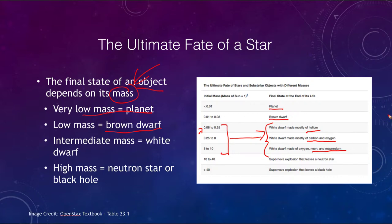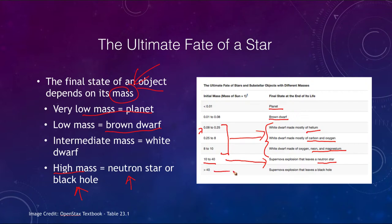Stars in the range of 10 to 40 solar masses will undergo a supernova explosion that leaves behind a neutron star. Those high-mass stars will leave either a neutron star or a black hole. Black holes generally form only from stars over 40 times the mass of the Sun, so they are very rare — the higher the mass, the fewer stars we get.